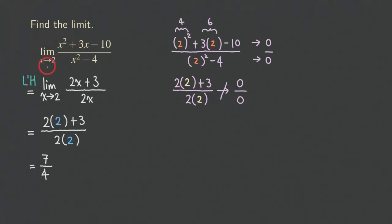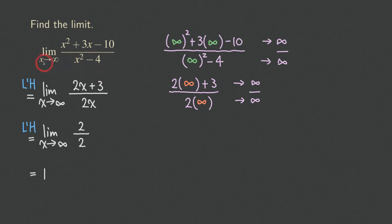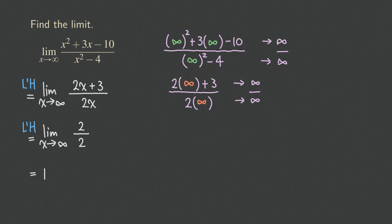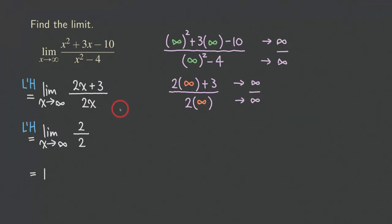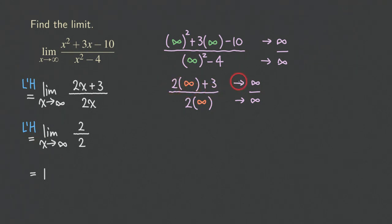The two answers are really different, but the processes are similar, and I only made one change. For the first example, x is approaching 2, which causes the indeterminate form 0 over 0. For the second example, x is approaching infinity, which causes the indeterminate form infinity over infinity, giving a different answer. Make sure you check the form before applying L'Hôpital's rule. I put these two examples together so you can see the difference and appreciate that there are two different forms where L'Hôpital's rule applies. Thank you for watching, see you next time.